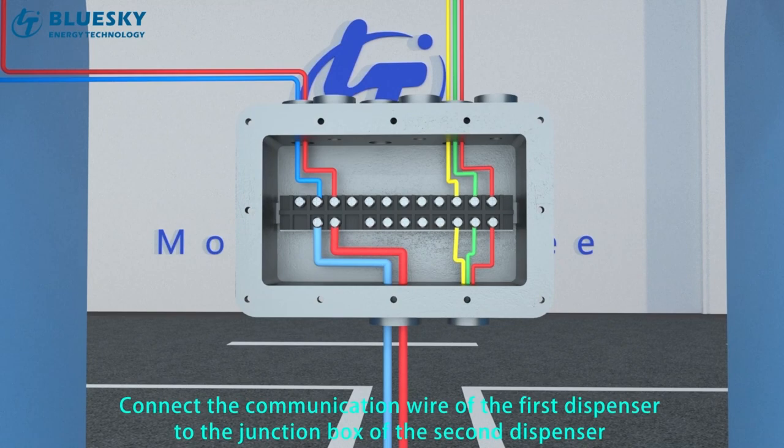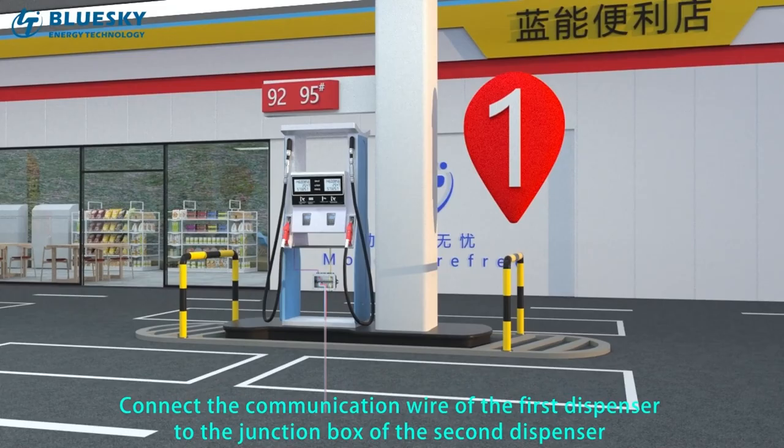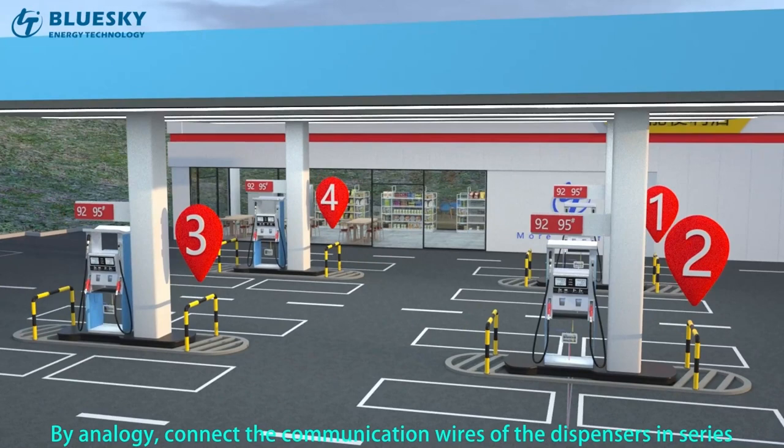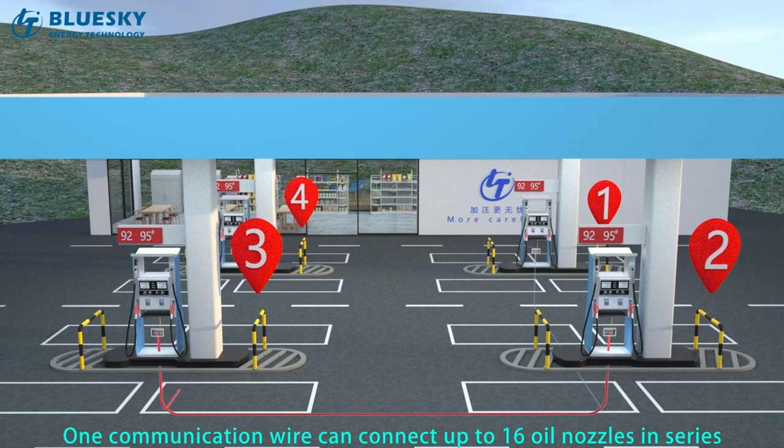Connect the communication wire of the first dispenser to the junction box of the second dispenser. By analogy, connect the communication wires of all dispensers in series. One communication wire can connect up to 16 oil nozzles in series.